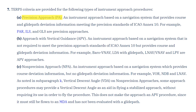A precision approach is based on both course and glide path deviation information — an example being the traditional ILS approach. An approach with vertical guidance, or APV, also uses both course and glide path deviation information, but doesn't have to meet the standards of ICAO Annex 10. An example given is an LPV approach, which we can fly on many WAAS-equipped GPS units.